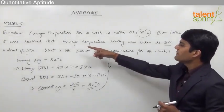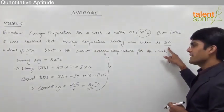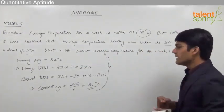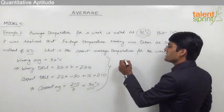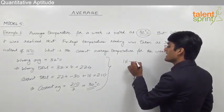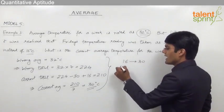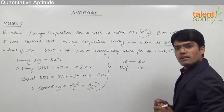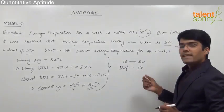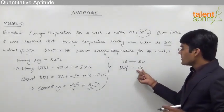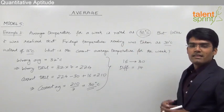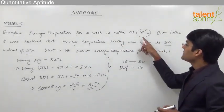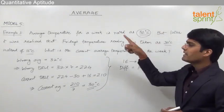Friday's temperature reading was taken as 30 degrees instead of 16 degrees. So the actual temperature is 16 but it was taken as 30, meaning the difference between these two values is 14 degrees. While calculating the average, 14 degrees was added extra in the total, which is why we got a wrong average.